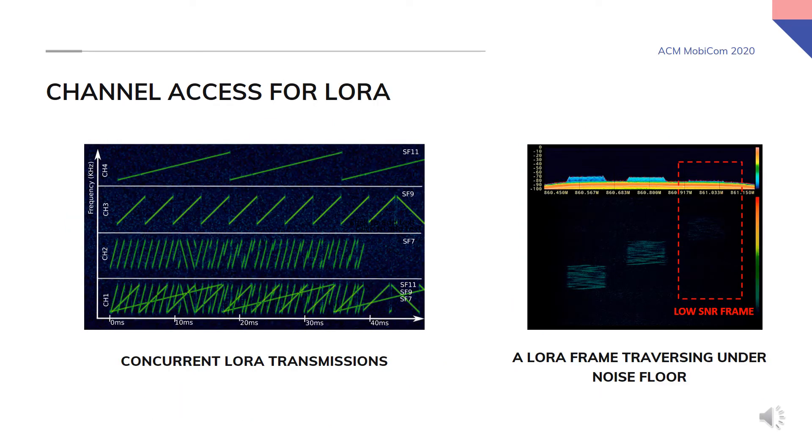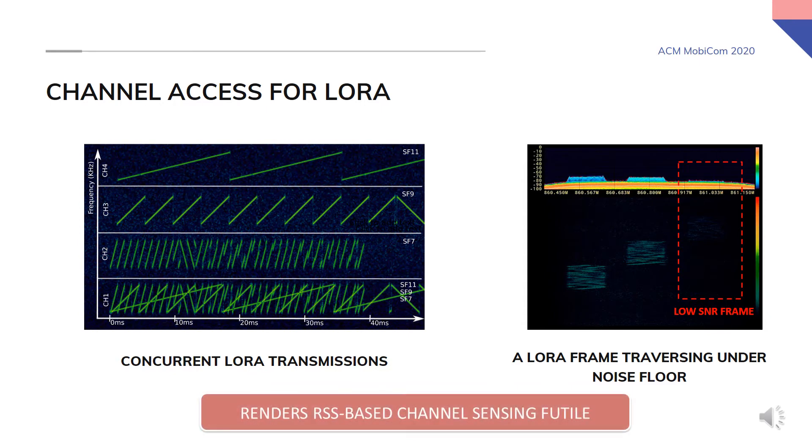However LoRa heavily relies on concurrent transmissions via multiple spreading factors for improved network capacity. At the same time LoRa frames could also traverse under the noise floor. As such simply using RSS based channel sensing will not allow us to detect concurrent transmissions as well as those under the noise floor. This renders RSS based channel sensing futile for LoRa.